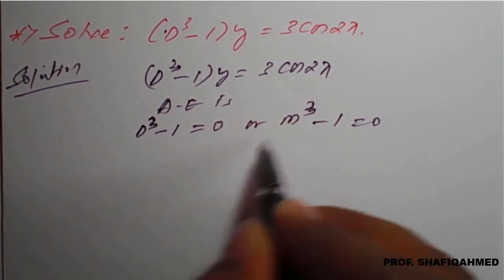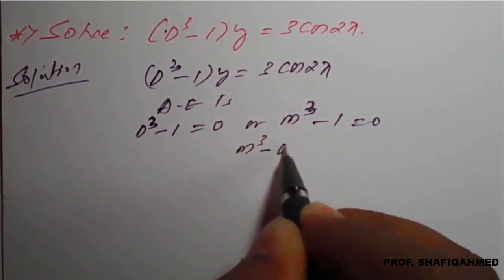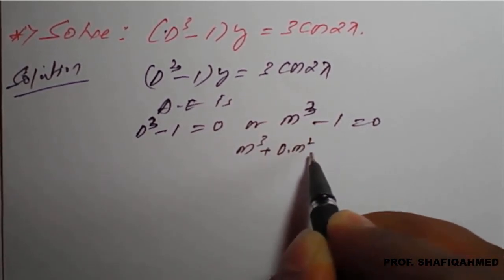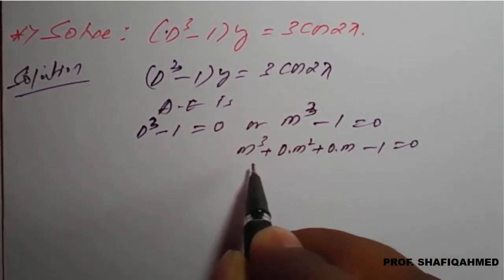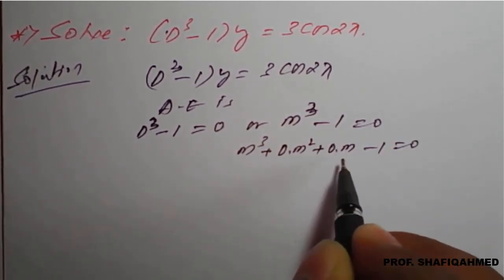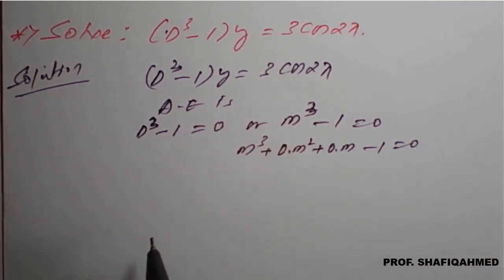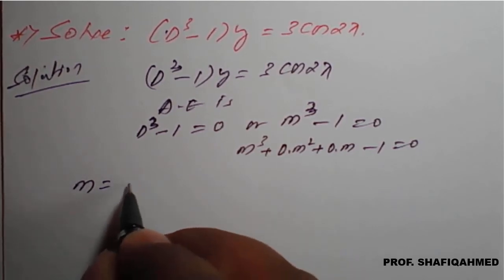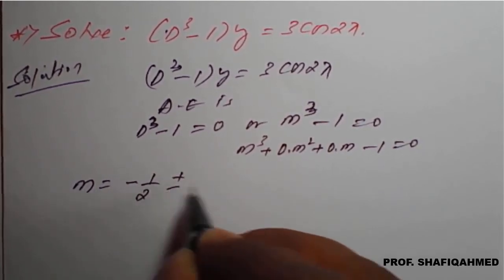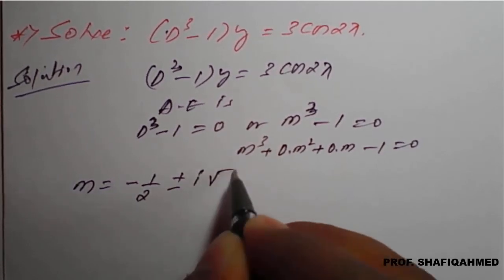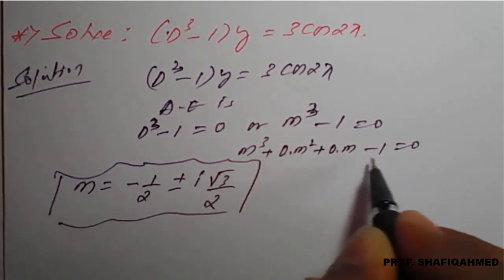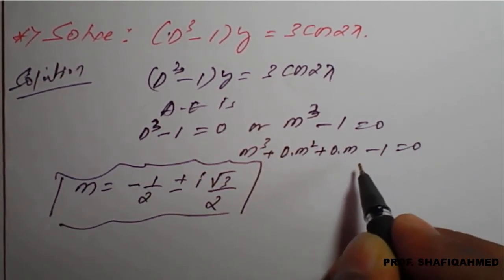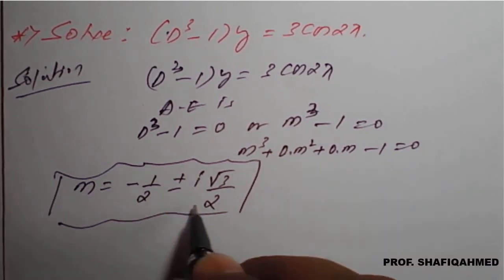You can rewrite it as m³ + 0·m² + 0·m - 1 = 0. Using the calculator, we get the roots directly. So m is equal to -1/2 ± i·(√3/2). You can check — you will get this root when you feed this cubic equation into the calculator.